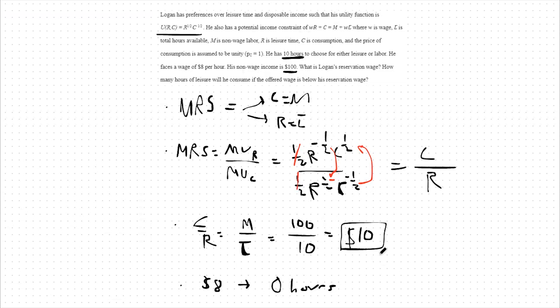Again, our interpretation of our reservation wage is the lowest wage I would possibly take. If I'm willing to take no lower than $10 an hour, but I face a wage of $8 an hour, I would work zero hours.